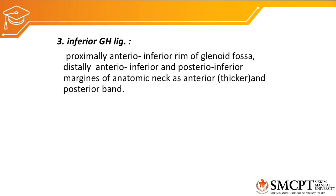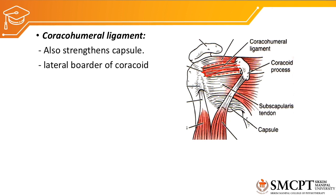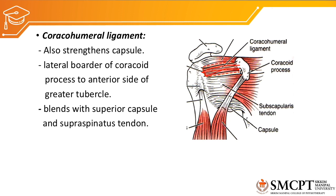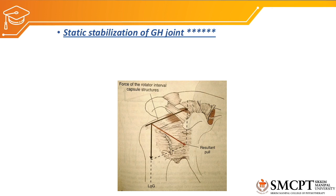The inferior glenohumeral ligament attaches proximally at the anterior-inferior rim of the glenoid fossa and distally to the anterior-inferior and posterior-inferior margins of the anatomical neck. It has two bands — an anterior and a posterior band, with the anterior band being thicker. This inferior glenohumeral ligament also forms a pouch inferiorly called the axillary pouch. The coracohumeral ligament runs from the lateral border of the coracoid process to the anterior side of the greater tubercle. It blends with the superior capsule and supraspinatus tendon and is taut during adduction, restricting inferior and superior translation of the humeral head.